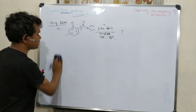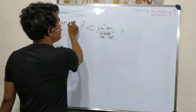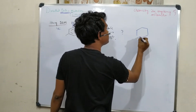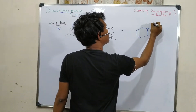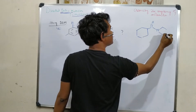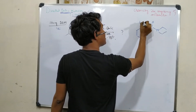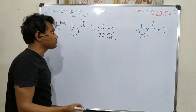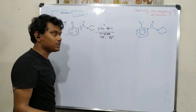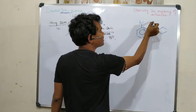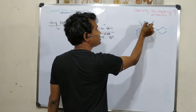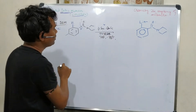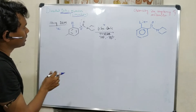After this coordination, the ortho proton will be abstracted and it will produce the aryllithium intermediate. This position is not attacked because of the bulkiness of the secondary butyllithium reagent — that's why the carbonyl group is not attacked. This oxygen always remains in coordination with the lithium salt.